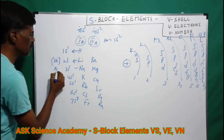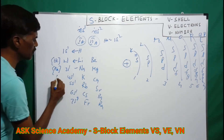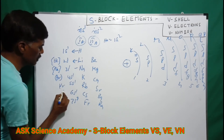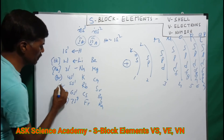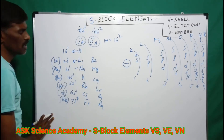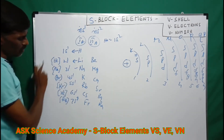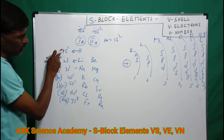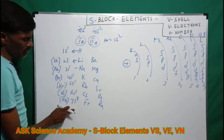Here, the core configurations are: Helium, Neon, Argon, Krypton, Xenon, Radon. After the core configuration comes 1s1, 2s1, 3s1, 4s1, 5s1, 6s1, 7s1 — representing the first through seventh periods.